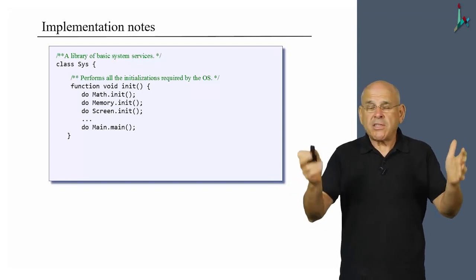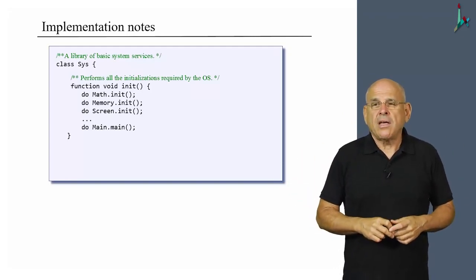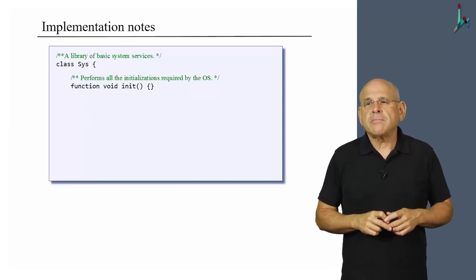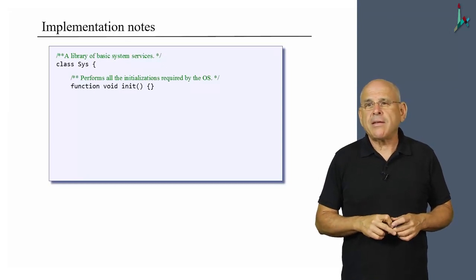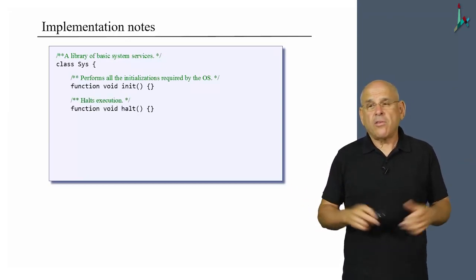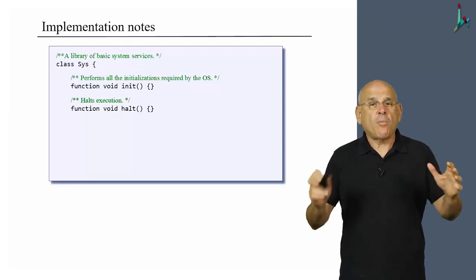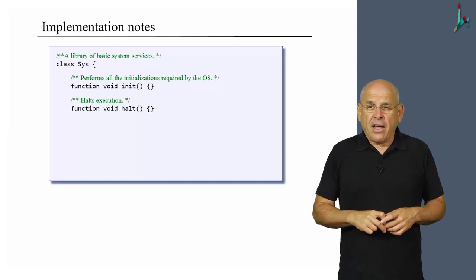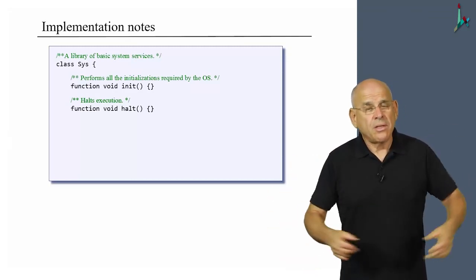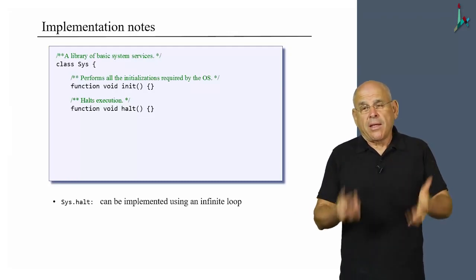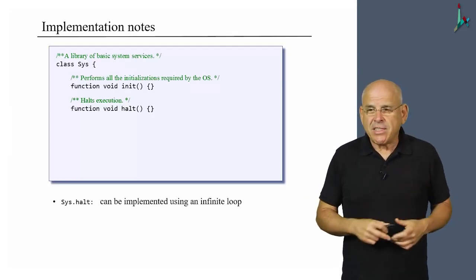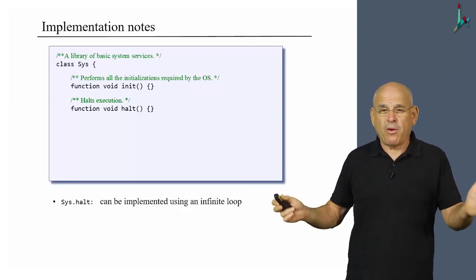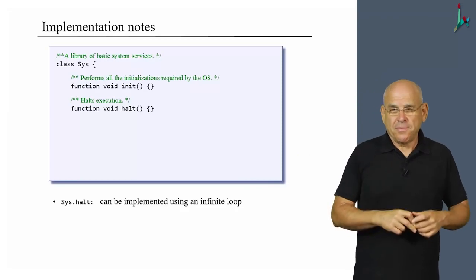So that's the init function, which is by far the most interesting function in this sys class. Then we have a few more utilities, which are necessary but not terribly exciting. We have a halt utility that is designed to stop the computer in whatever it is it's currently doing. And I shouldn't say stop, but it's designed to create the illusion that the computer is stopped. Because one way to implement this whole thing is simply to put the computer into an infinite loop. So that's what you can do if you want to. It's not probably the most elegant way to do it, but it works.